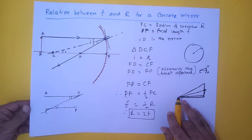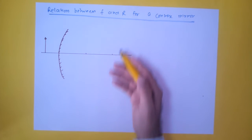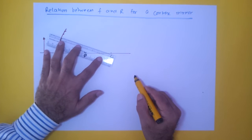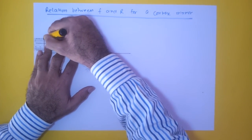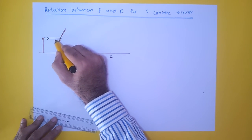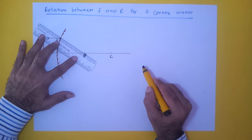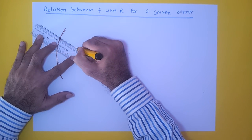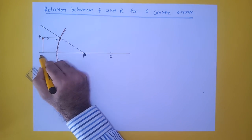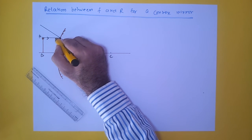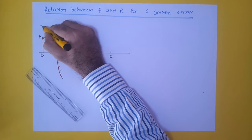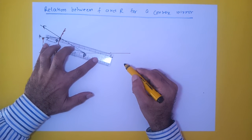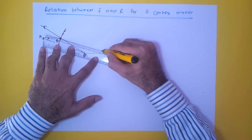We can perform a similar exercise for a convex mirror. For the convex mirror, the focus and center of curvature are on the other side. An incident ray from the object hits point D on the mirror and gets reflected such that it appears to come from the focus. We again draw an imaginary line from the center of curvature through point D.